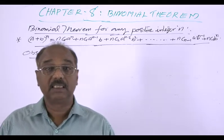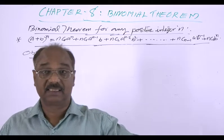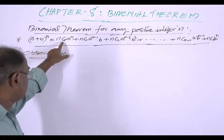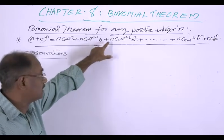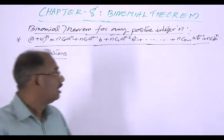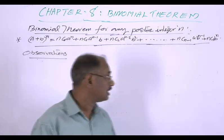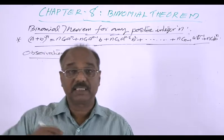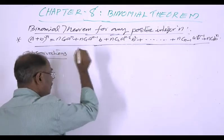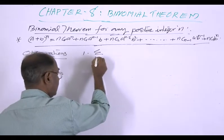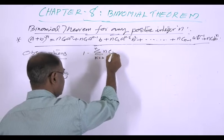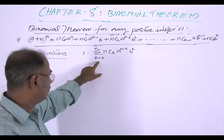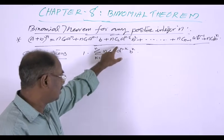Now we can observe certain facts in this theorem. The theorem states: (a + b)^n = nC0 * a^n + nC1 * a^(n-1) * b + nC2 * a^(n-2) * b^2 + ... + nCn * b^n, for any positive integer n. The first observation is that we can write this using sigma notation: sum from k = 0 to n of nCk * a^(n-k) * b^k.